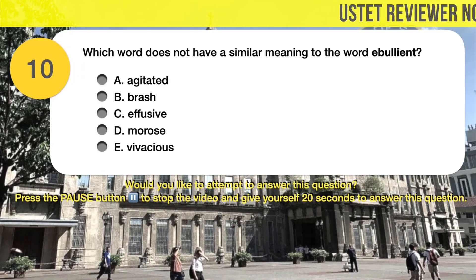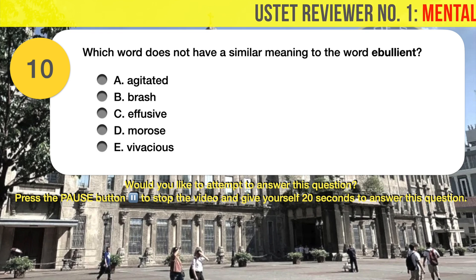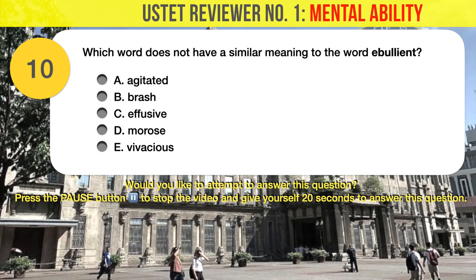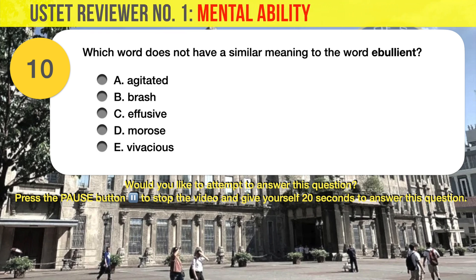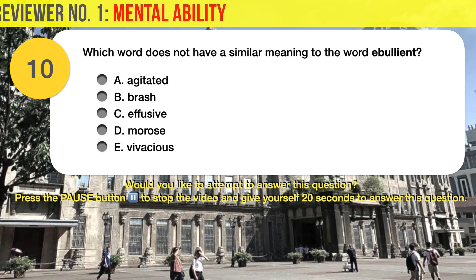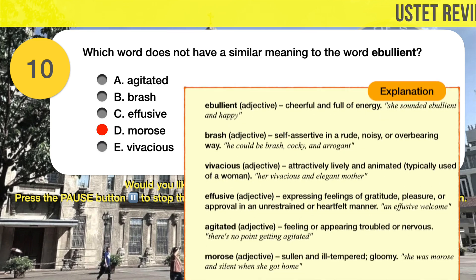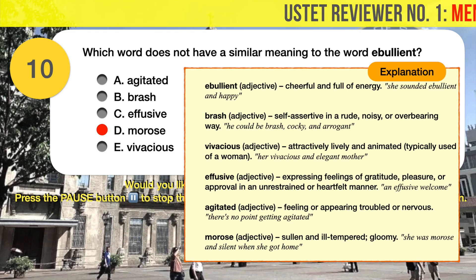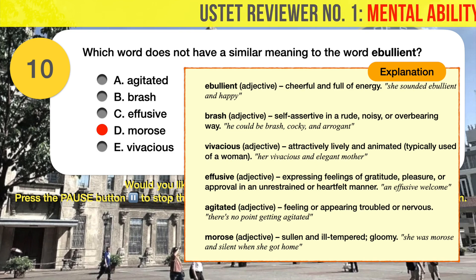Question number 10. Which word does not have a similar meaning to the word ebullient? The correct answer is D, morose. The word ebullient means cheerful and full of energy. It is somewhat related in a similar way to all the choices except morose, which is its exact opposite.